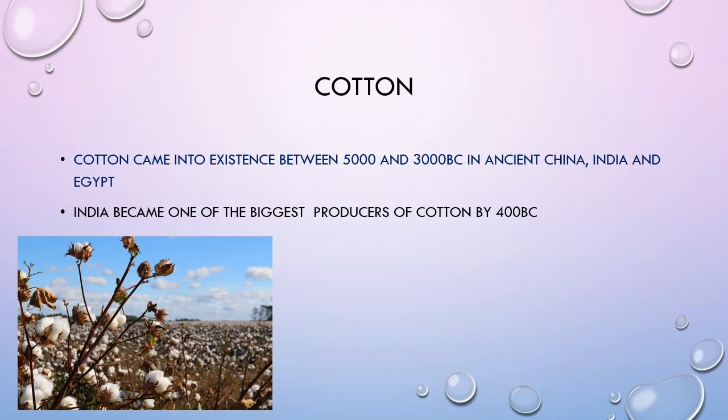Cotton, which is another plant fibre, came into existence between 5000 and 3000 BC in ancient China, India and Egypt. India became one of the biggest producers of cotton by 400 BC. Cotton comes from the cotton boll plant.